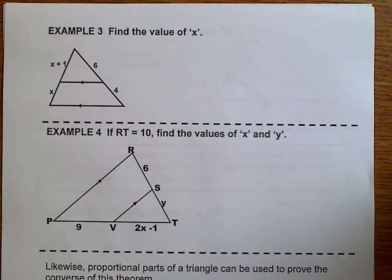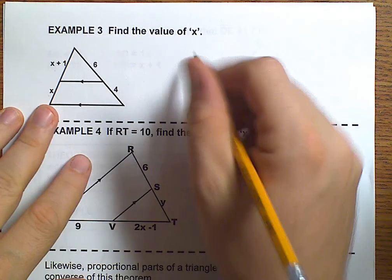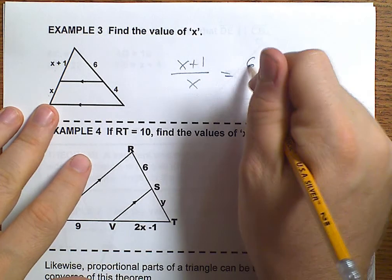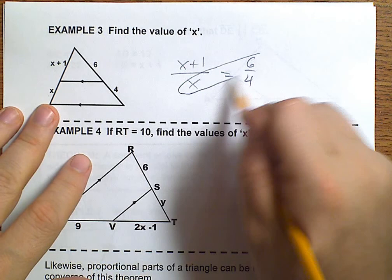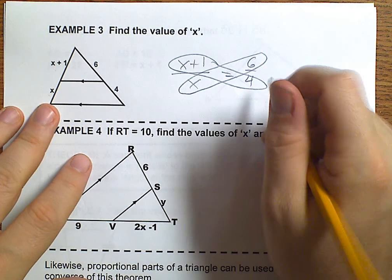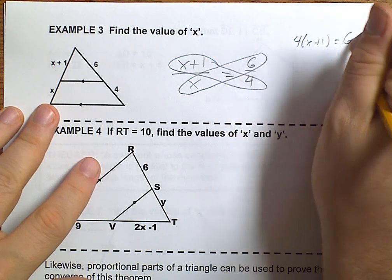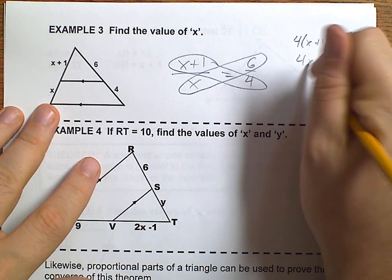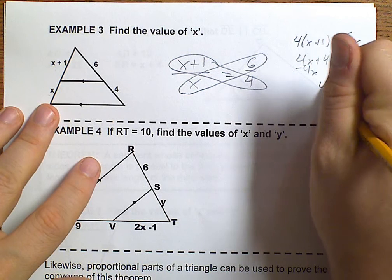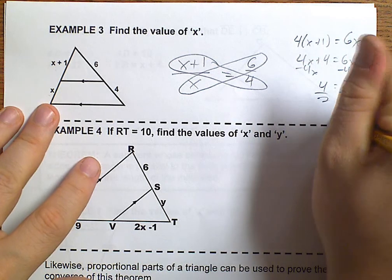Let's take a look at example number 3. Here, we have X plus 1 over X equals 6 over 4. We cross multiply, and we get that 4 times X plus 1 equals 6X. So 4X plus 4 equals 6X. Subtract 4X, we'll get that 4 equals 2X. So X must be 2.